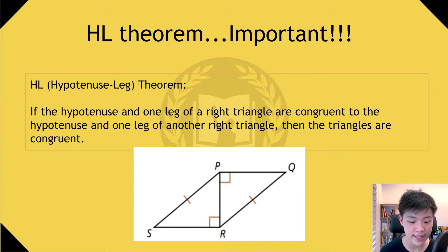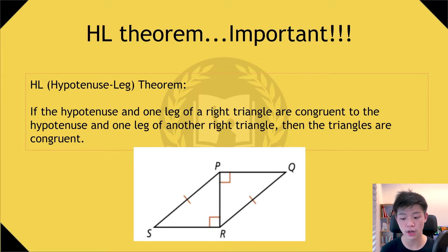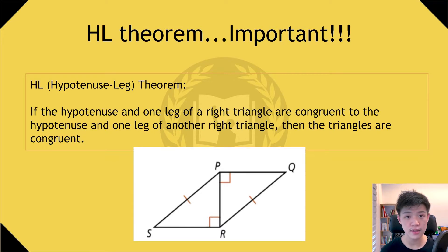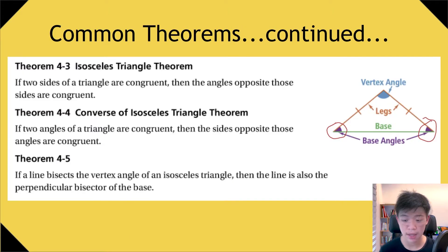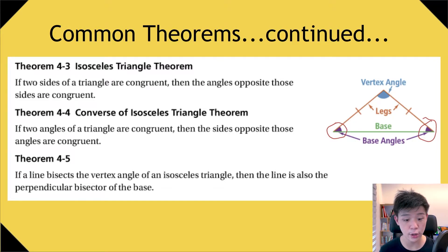Another important theorem is the HL, or hypotenuse-leg theorem. It states that if a hypotenuse and one leg of a right triangle are congruent to the hypotenuse and one leg of another right triangle, then the triangles are congruent. This is because a right triangle already has a right angle, so if you match two sides together, the third side is already determined. Here we have displayed more common theorems — please feel free to pause the video and take note of these.